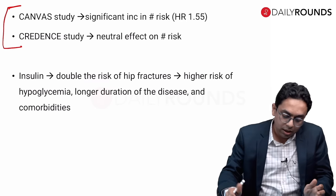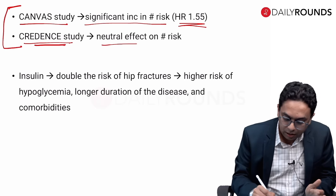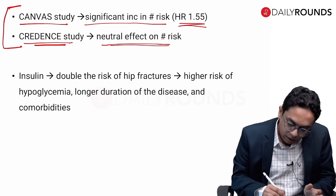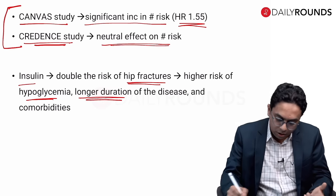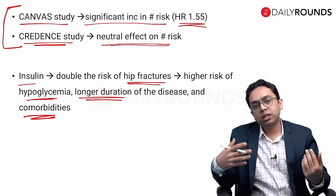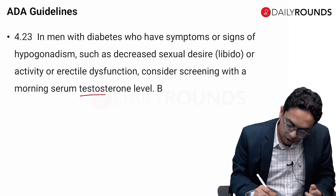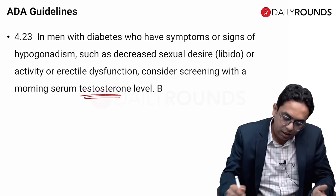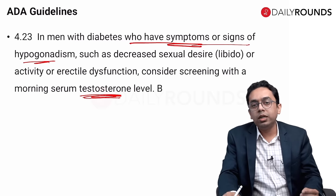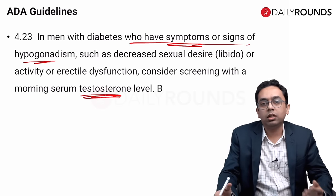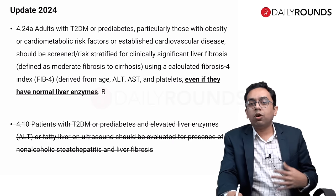Canagliflozin fracture risk: the CANVAS study showed a 50% increased fracture risk, though the CREDENCE study showed no increased risk. Insulin use is associated with increased fracture risk, probably due to hypoglycemia, longer disease duration, and microvascular/macrovascular complications. Regarding testosterone: the ADA guideline states that testosterone testing should only be performed in patients with symptoms or signs of hypogonadism — it is not a routine test.